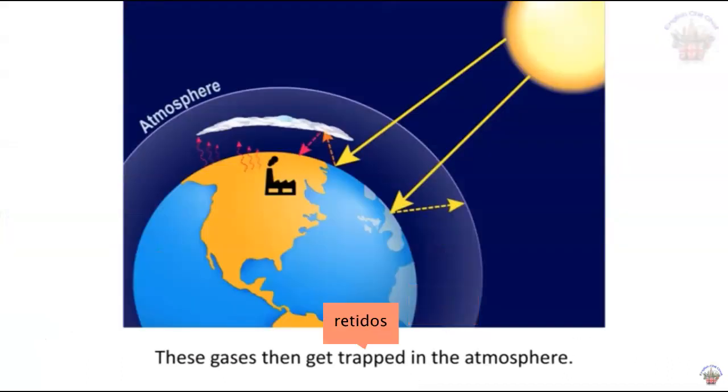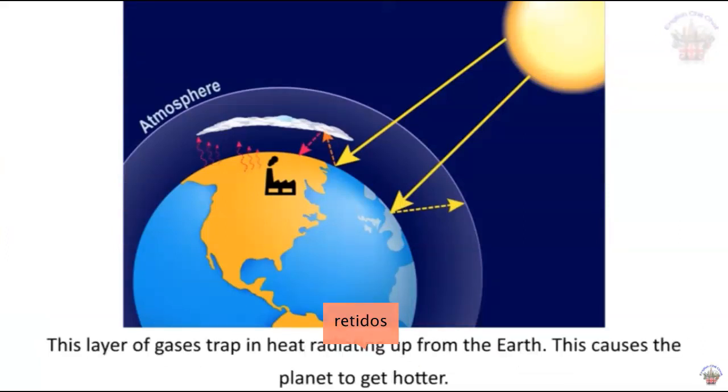These gases then get trapped in the atmosphere. This layer of gases traps in heat radiating up from the Earth. This causes the planet to get hotter.